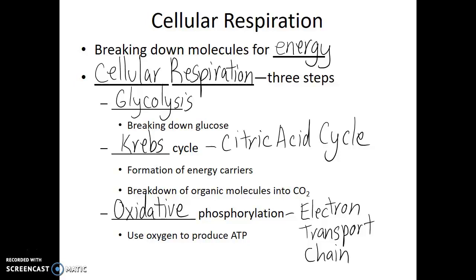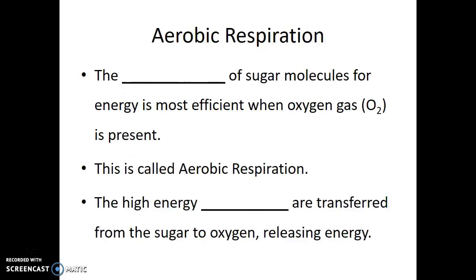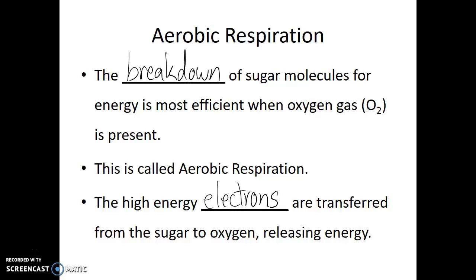Cellular respiration is known as aerobic respiration because it's done in the presence of oxygen gas. The breakdown of sugar molecules for energy is most efficient when oxygen gas is present. For this reason, it's called aerobic respiration. In this process, the high-energy electrons are transferred from sugar to oxygen, and in this transfer from organic molecules to oxygen, they release energy.